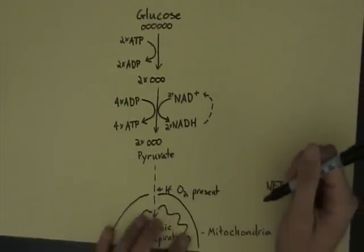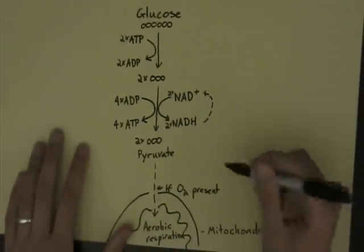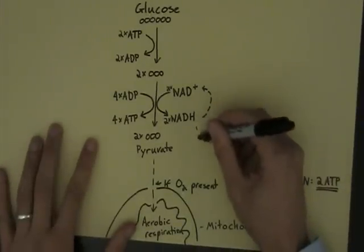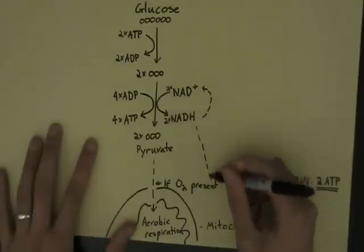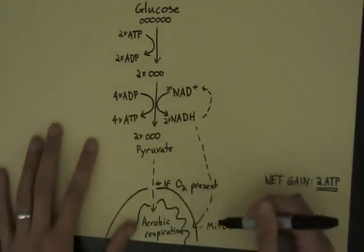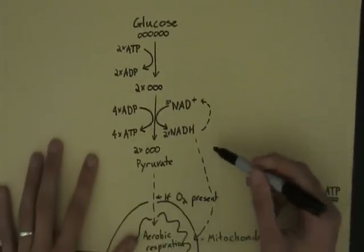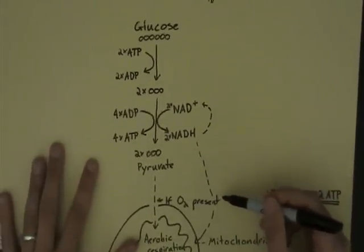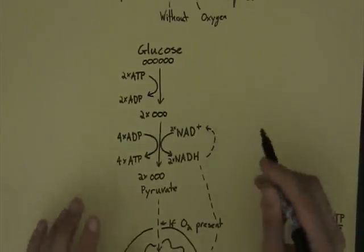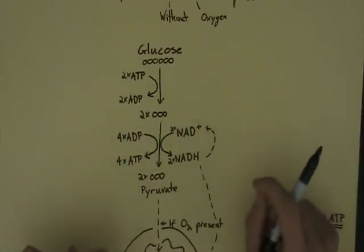Now normally, when there's oxygen present, this NADH is going to go down here, if oxygen is present, into the mitochondria and used as a source of energy. But it can't do that if there's no oxygen present. So we have to make this NAD+ again, and there's two different ways of doing this.